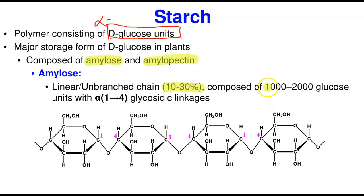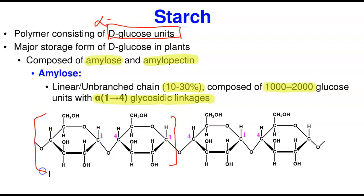Amylose is a linear polysaccharide of glucose. Looking at the structure, glucose units are joined together by alpha-1,4 linkages — it's all alpha-1,4, linear, which is why it is an unbranched polysaccharide. The amylose itself is linear, unbranched, and constitutes about 10 to 30 percent of starch. Those monomeric saccharide units are held together by alpha-1,4 glycosidic linkages.